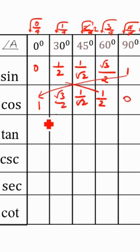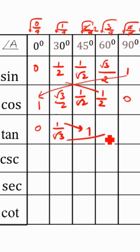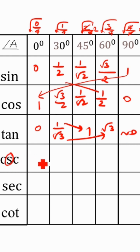0 comes this side. Tan: tan of 0 is 0, so 1 by root 3, 1 comes this side, root 3 comes this side, not defined.